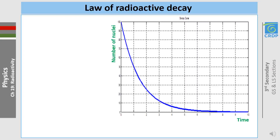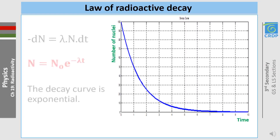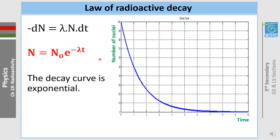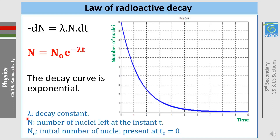Moving to the law of radioactive decay: the decay curve is exponential, described by N = N₀ · e^(−λt). This means N, the number of nuclei left at a given instant, decays exponentially starting from N₀, the initial number of nuclei at t = 0. This is explained by the differential equation: −dN/dt = λN.